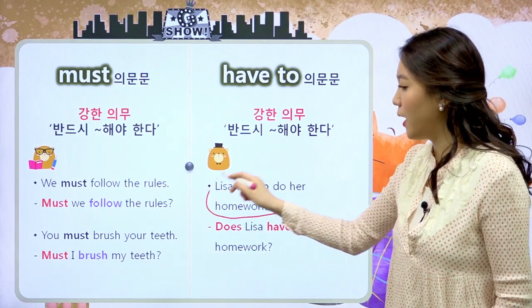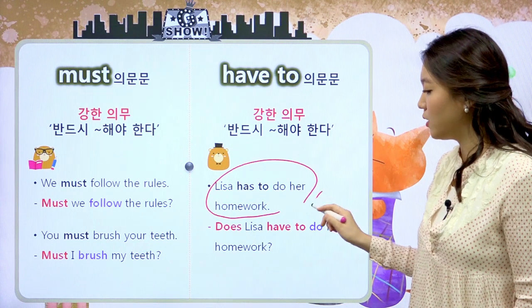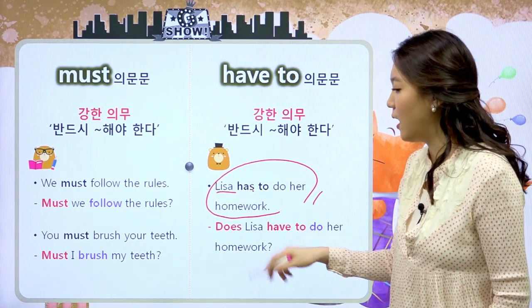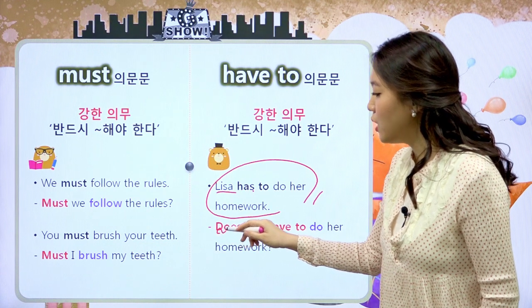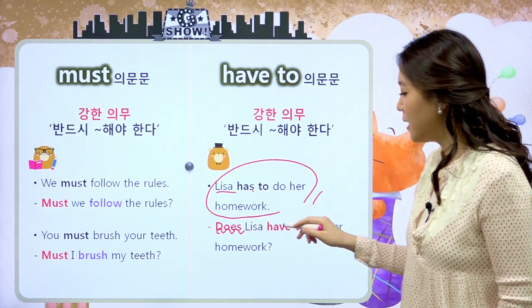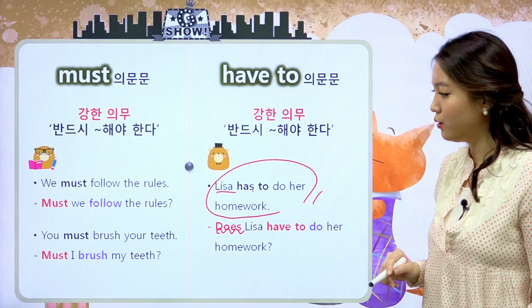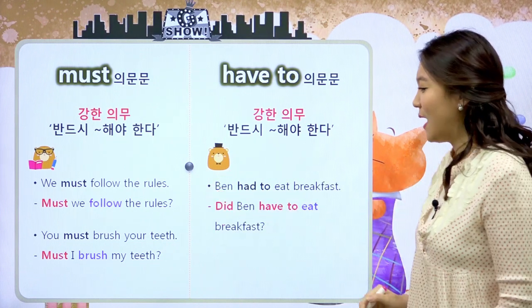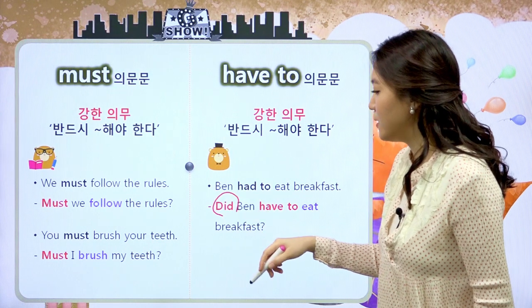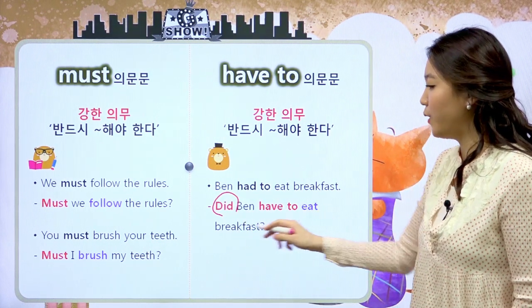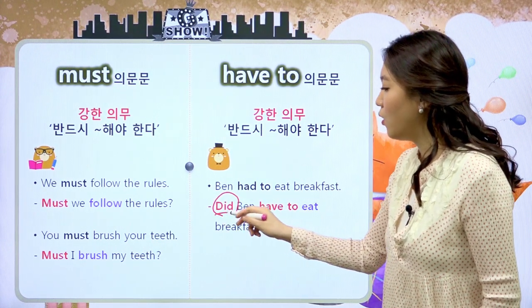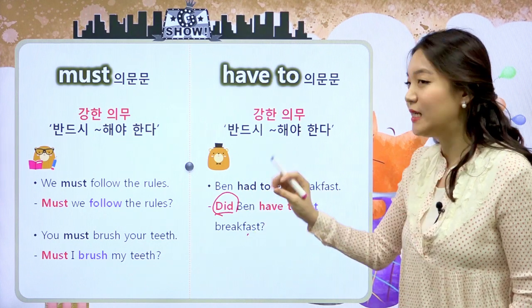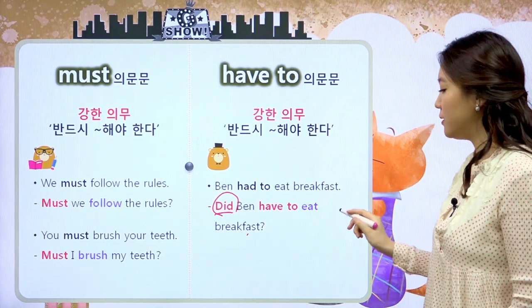리사 한번 살펴볼게요. 3인칭 단수 현재니까 Does가 앞으로 나와서 'Does Lisa have to do her homework?' 이렇게 되는 거고요. 과거는 Did가 앞으로 나와서 'Did Ben have to eat breakfast?' 하면은 과거에 벤이 아침을 먹어야만 했었니?라고 물어보는 문장이 되겠습니다.